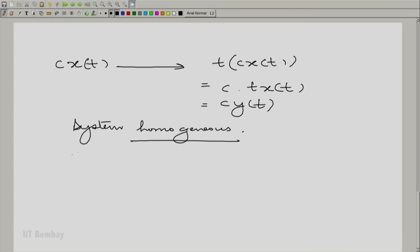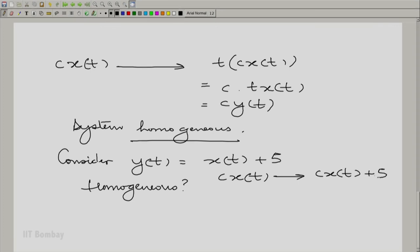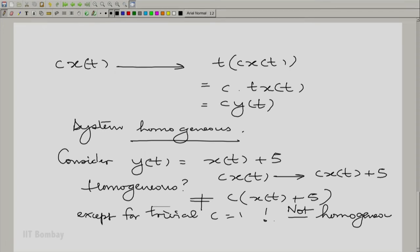Before we go to that property, let us complete the last example that we had as far as additivity was concerned. Consider the system y(t) = x(t) + 5 and ask is this system homogeneous? Apply c×x(t) to the system and you can see the output is going to be c×x(t) + 5. That is not the same thing as c times [x(t) + 5] in general except for the trivial case c = 1. So clearly the system is not homogeneous. In fact, therefore, it is neither additive nor homogeneous. However, I have placed both these examples on the same page here with an intent that they must be investigated for the next property that we are going to see.